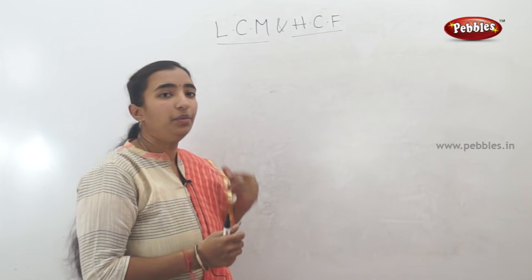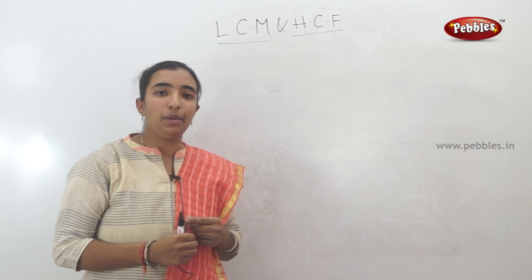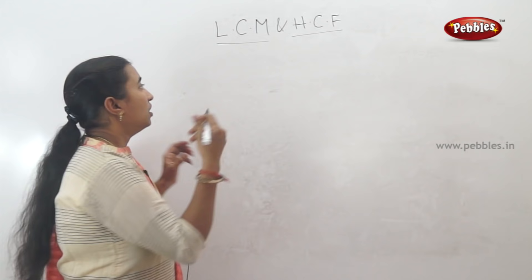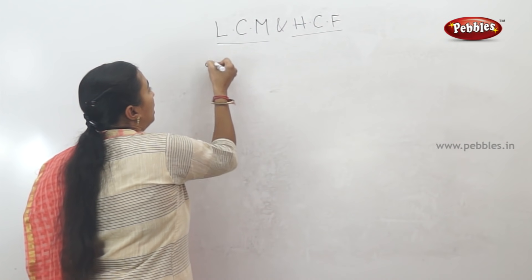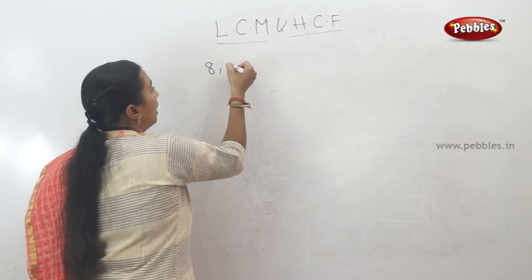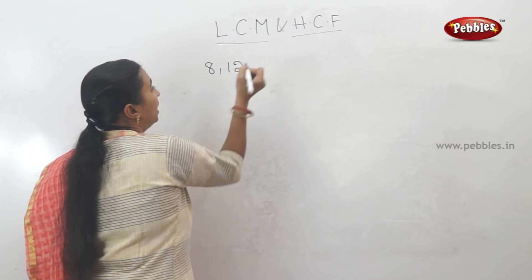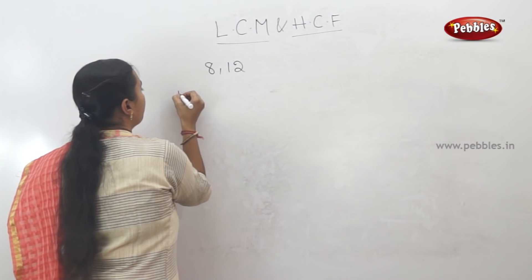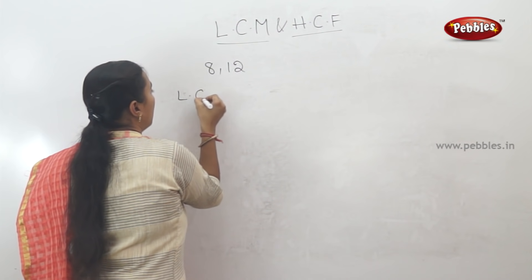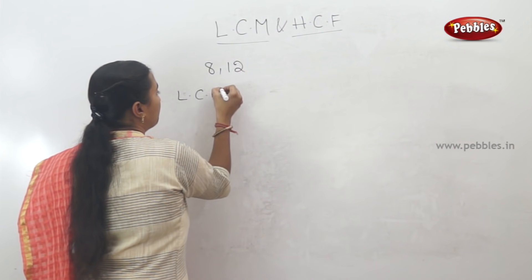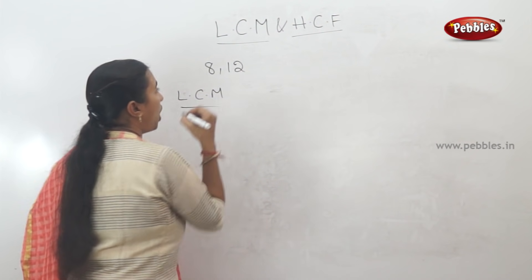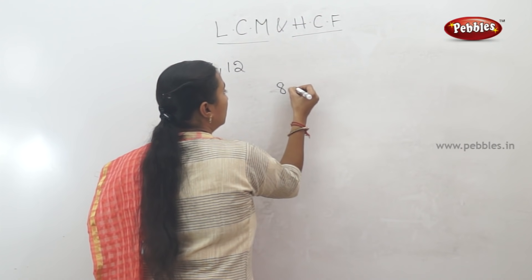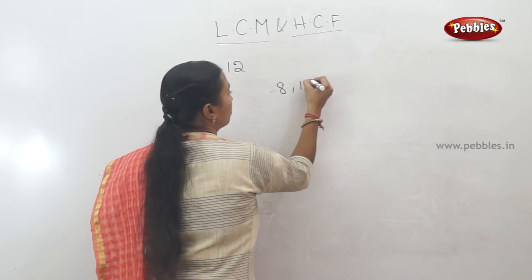First, let's take an example with two numbers. We are going to find out LCM and HCF. For example, let's use 8 and 12. Using the usual common method, let's find the LCM of 8 and 12.